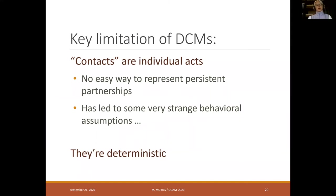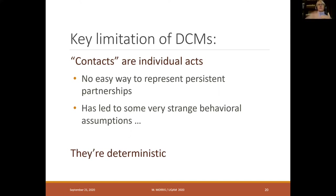The key limitation of deterministic compartmental models is that contacts are individual acts — there's really no easy way to represent persistent partnerships. In a DCM, every time somebody wants a contact, they essentially pick randomly from the population; it might be biased by age preference, but the individual picked is otherwise random, and that happens for each subsequent act. There's no way to represent a partnership where you have the same person for repeated acts.